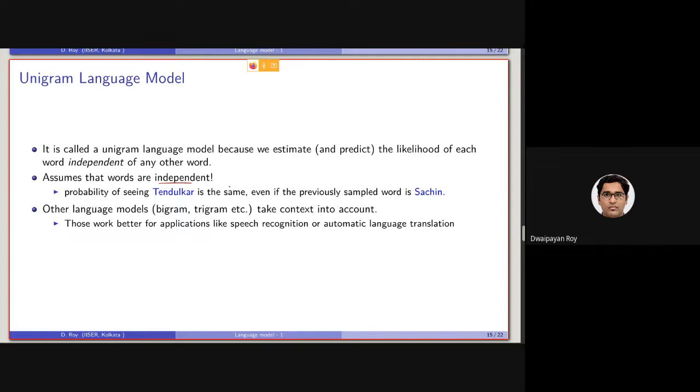To work on this kind of situation, we can consider higher gram language model. In general, we can call this as n-gram language model. For unigram, we are basically considering n equals to 1. We can consider a bigram language model or trigram language model as well. What are they? I hope from the discussion on NLP you can remember that, but still let me discuss this.